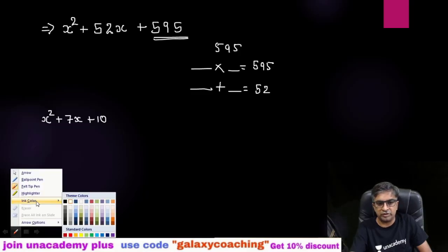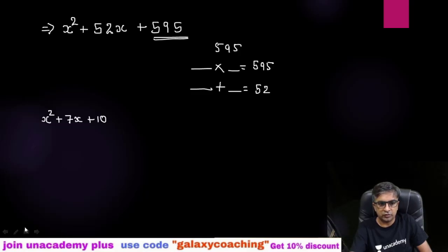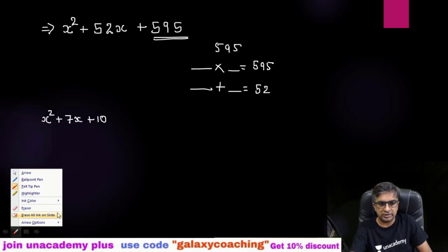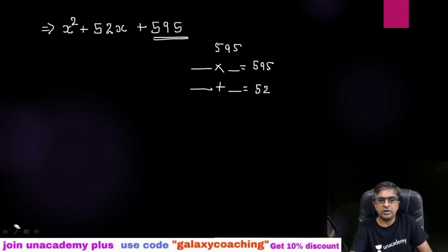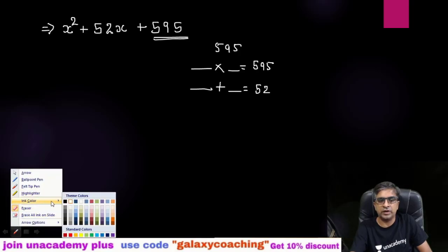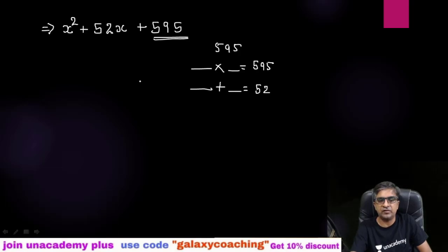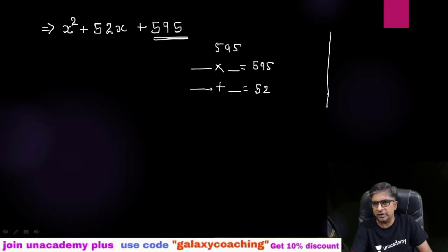So what we need to do — let me erase this part so that it will be helpful for us. What we need to do is just find out the prime factors of 595. Let me find out.